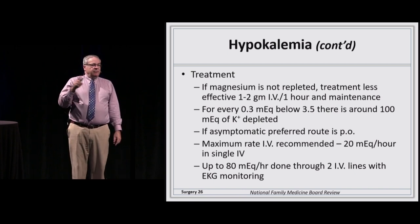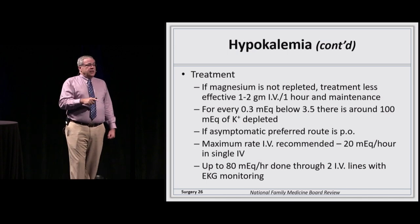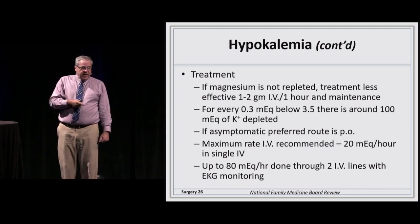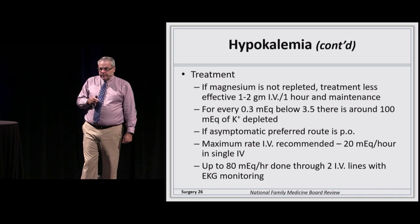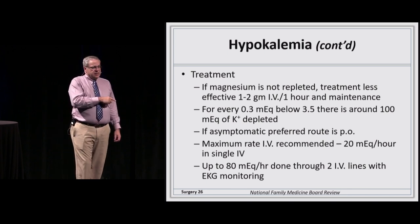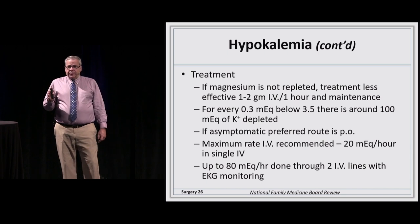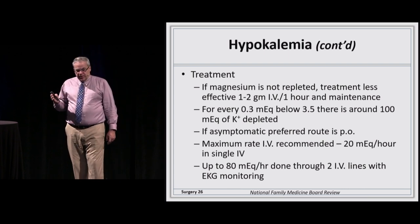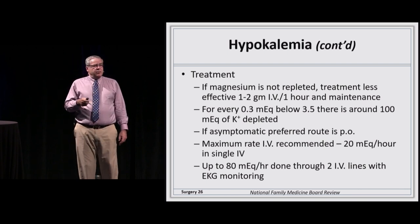Potassium and magnesium are linked — if you don't replace magnesium, hypokalemia may be refractory. Give a bolus of 1–2 grams IV magnesium over an hour, then a maintenance dose, along with potassium replacement. Remember most potassium is intracellular: for every 0.3 mEq drop in serum potassium below normal, there are 100 mEq depleted from total body stores. The preferred replacement route is oral; if IV is needed, the maximum rate is 20 mEq/hour per IV line, or up to 80 mEq/hour with multiple IVs and EKG monitoring.